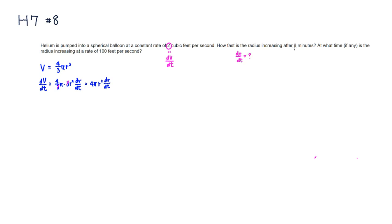This is after 3 minutes. Everything else is written in seconds, so 3 minutes multiplied by 60 is 180 seconds. So this is going to be our t value.